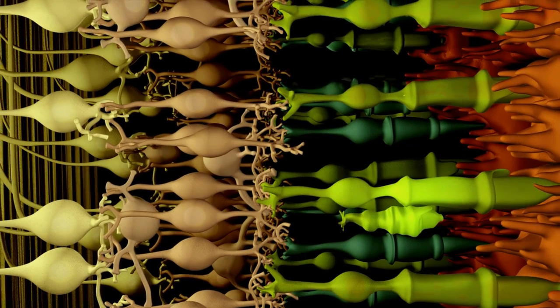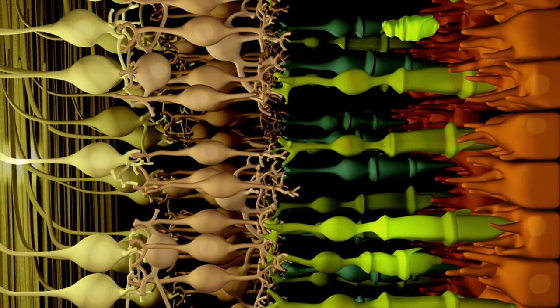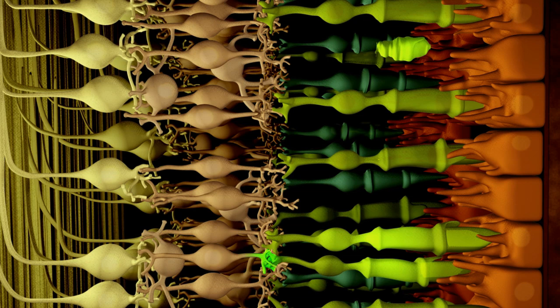In the lab, researchers have been successful in restoring some vision to mice with damaged retinas. Currently, cells from human eye organ donations are being used for transplantation research.